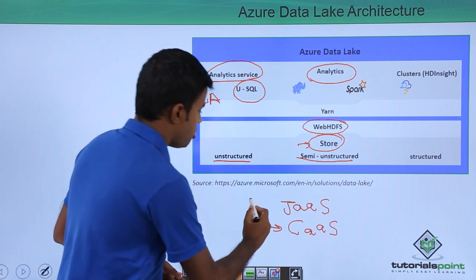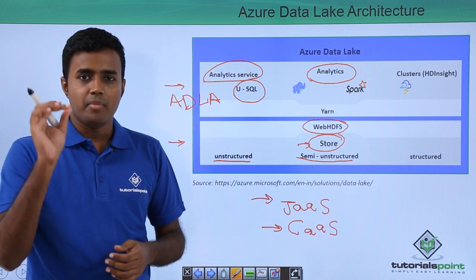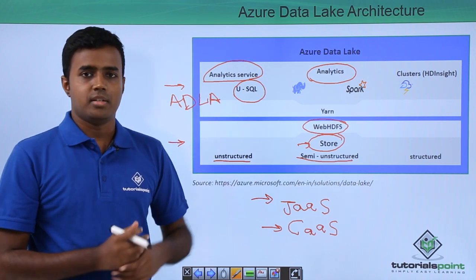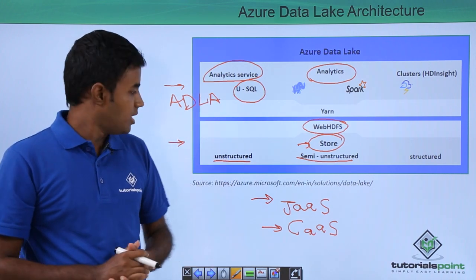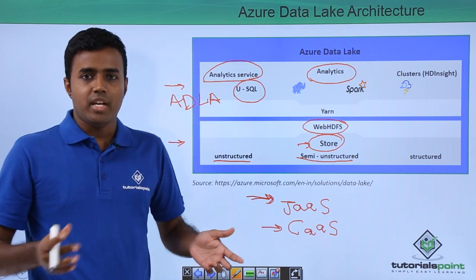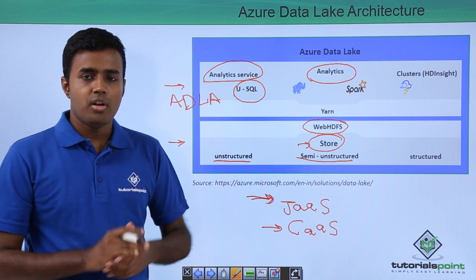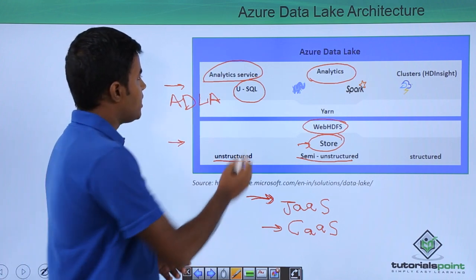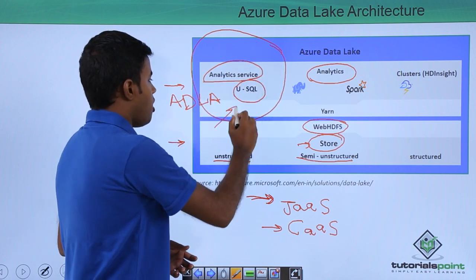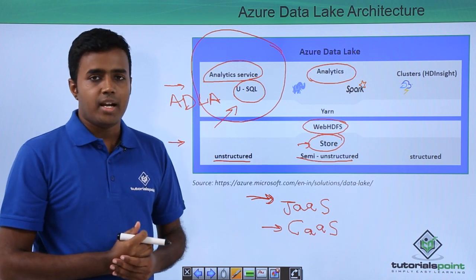Whereas in job as a service, you only worry about submitting the job — you only worry about the code that basically goes and does aggregation, filtering, and so on. You really do not worry about anything related to the underlying VM. In this video tutorial, what we will do is cover only the analytics service or job as a service, which will be part of Azure Data Lake Analytics.